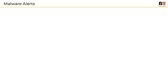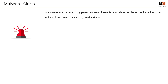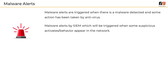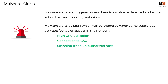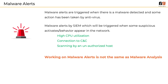At this point, one should understand the difference between malware analysis and handling a malware alert. As a security analyst, we would get malware alerts triggered directly from an antivirus solution or through suspicious behavior typically identified in the form of SIEM correlation rules — for example, high CPU utilization, connection to command and control, or scanning by an unauthorized host. In these cases, we try to identify the cause of the suspicious behavior through malware alert handling playbooks. This is not the same as malware analysis. In fact, the end result of working on a malware alert could lead to malware analysis.